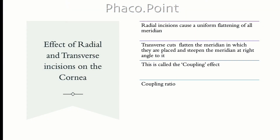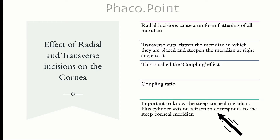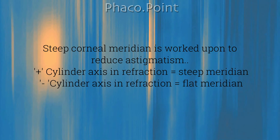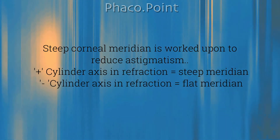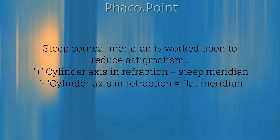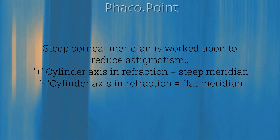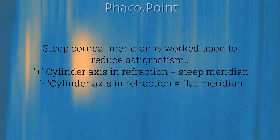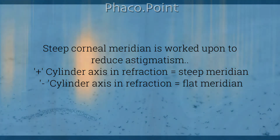Since any type of incision on the cornea will produce a flattening effect, it is important for us to know before we embark on any incisional correction what the steep meridian is. The plus cylinder axis on refraction generally represents the steep meridian of the cornea, while the minus cylinder axis on refraction represents the flat meridian.